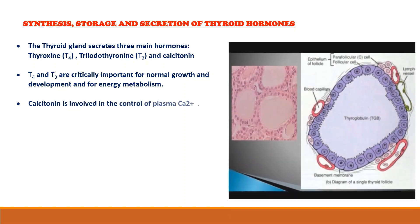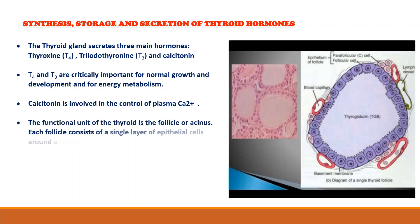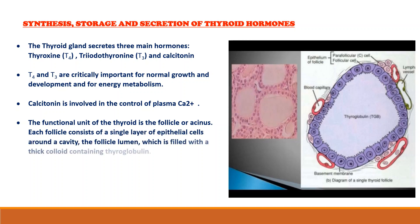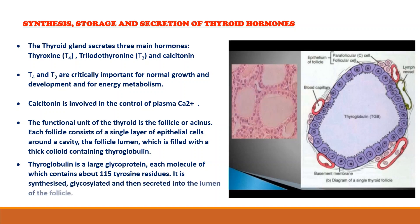So the term thyroid hormone is used to refer to T4 and T3. The follicle or acinus is the functional unit of thyroid. Each follicle consists of a single layer of epithelial cells around a cavity called the follicle lumen, which is filled with thick colloid thyroglobulin. This thyroglobulin is a large glycoprotein, each molecule containing 115 tyrosine residues. This follicle and thyroglobulin can be clearly pointed out in the figure.